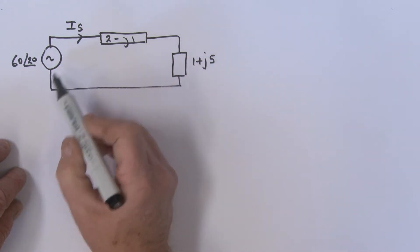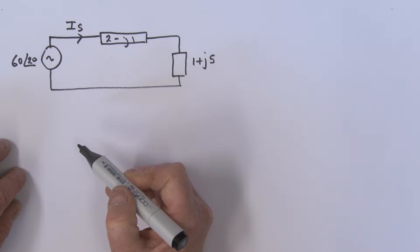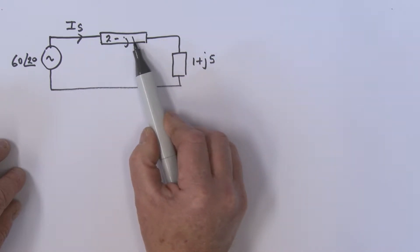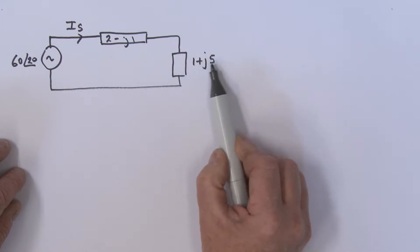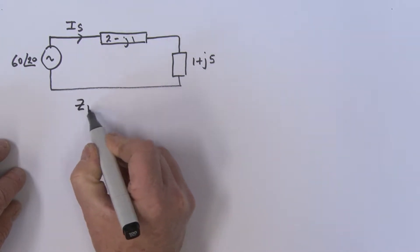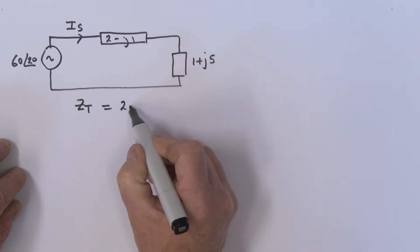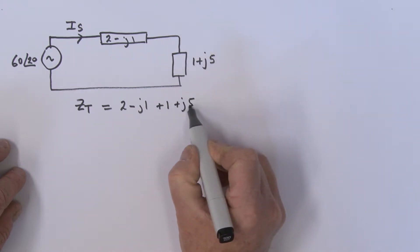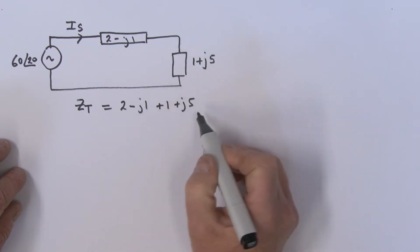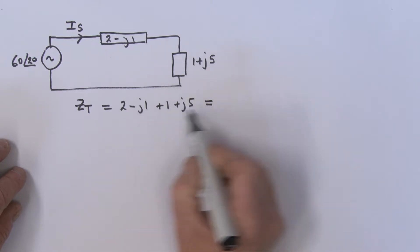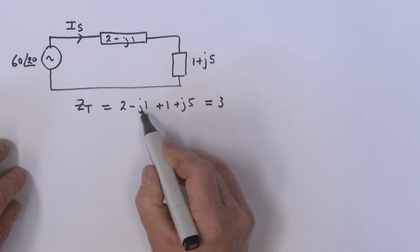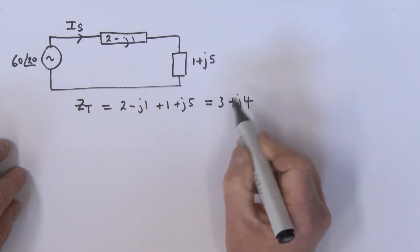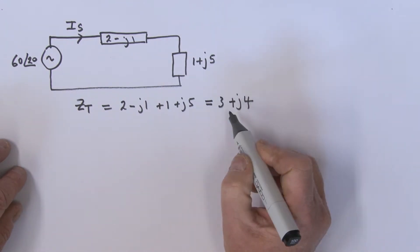Let's go ahead and find the total impedance that this signal source is actually seeing. We're expressing our impedances such that this block is 2 − j1 and this block is 1 + j5. So Z_T = (2 − j1) + (1 + j5). Adding the real parts and imaginary parts together, we get 3 + j4.